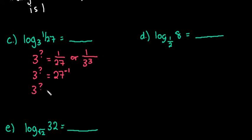Either way, you're going to end up with 3 to the negative 3rd power because in order for it to be in the denominator you do need a negative exponent and 3 times 3 is 9, 9 times 3 gives us 27, so the answer to this one would just be negative 3.